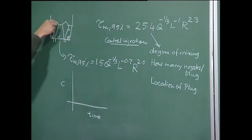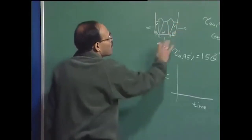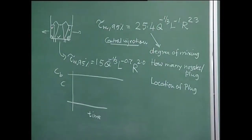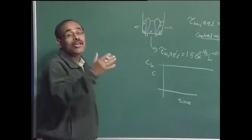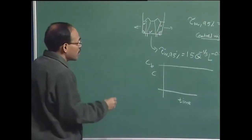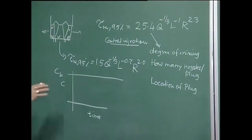When a tracer or element is added into the ladle, it cannot go out of the system. At large amounts of time, I will have a homogeneous concentration — say C_b. For example, if I have 1 ton of liquid and add 1 kg, the uniform concentration is 1/1000 × 100 in percentage. That is the uniform bulk concentration — the mass fraction of the added element divided by the total mass of fluid — and that is the final attainable concentration in the system.